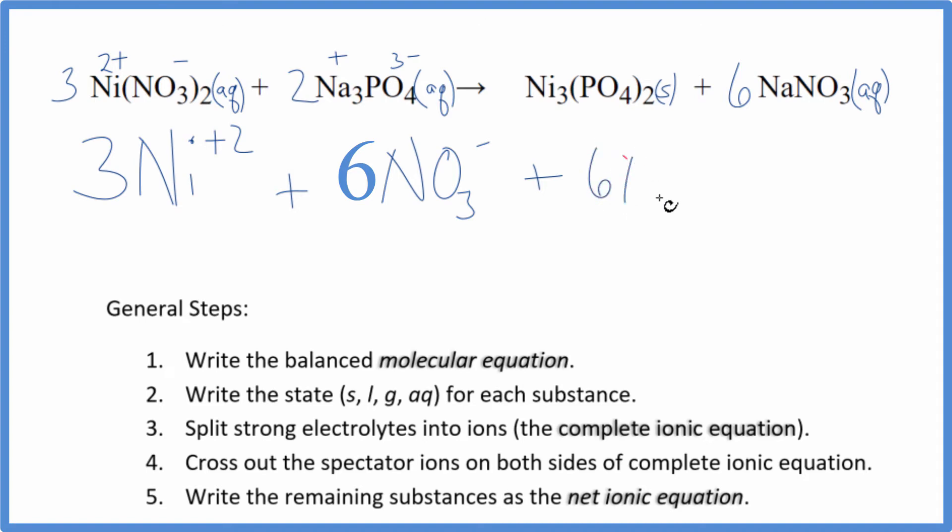And then we have two of these phosphate ions. So these are the reactants in our net ionic equation.